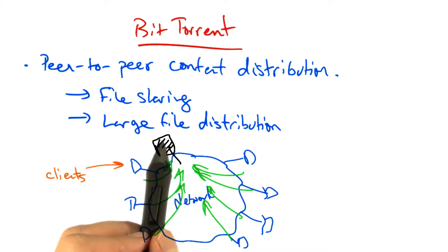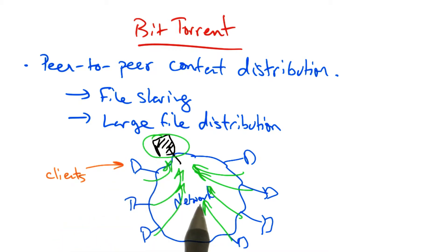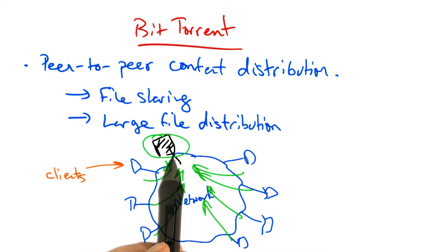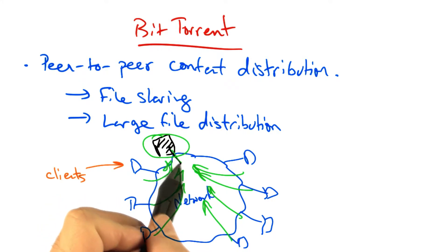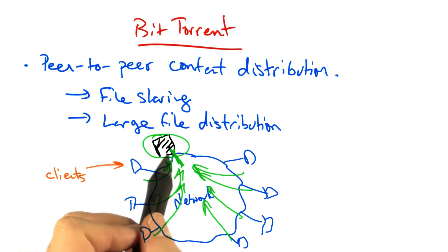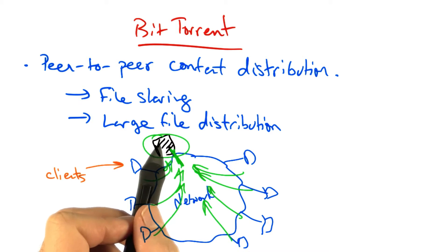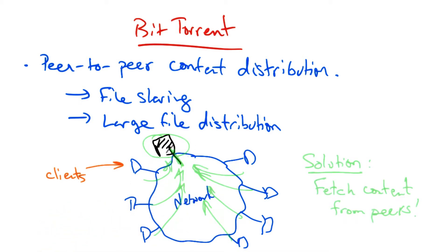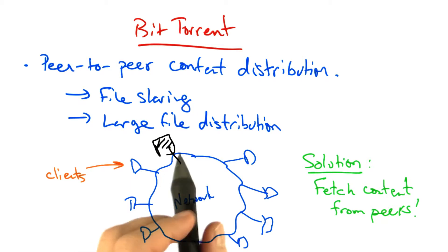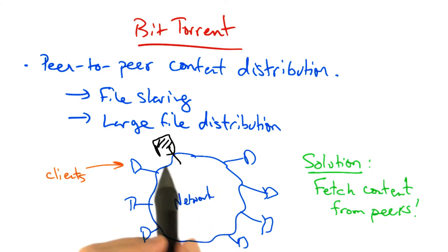But the problems with that, of course, are that the origin may be overloaded, and the act of making this request for a large file from the same location on the network may also create congestion or overload at the network where the content is being hosted. So a solution is to fetch the content from other peers, rather than having everyone fetch the content from the origin.